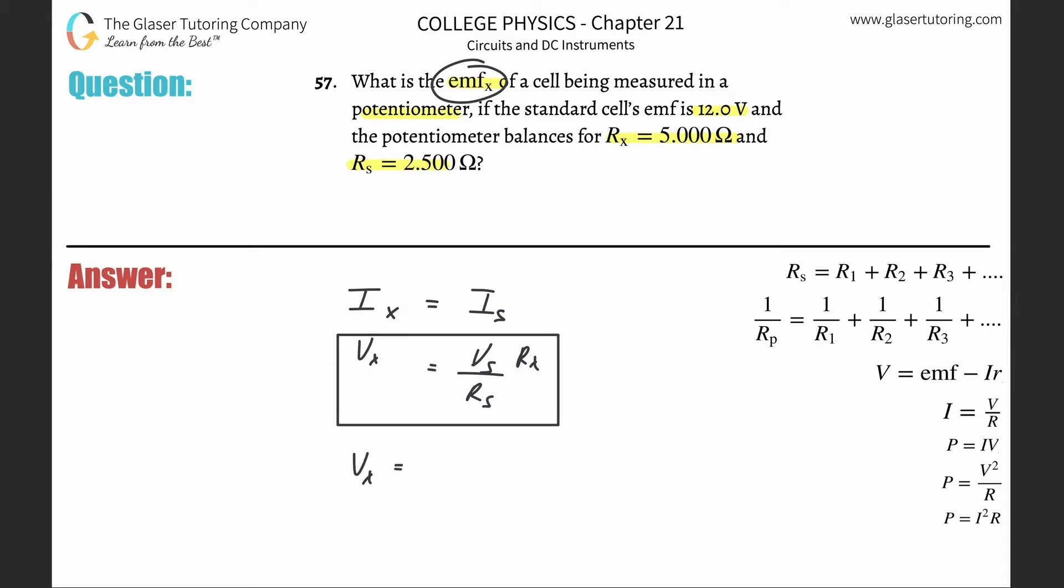So we have now the standard cell's EMF, that's V sub S, so that's 12. The R sub X they gave us is 5, and then divide that by the 2.5.